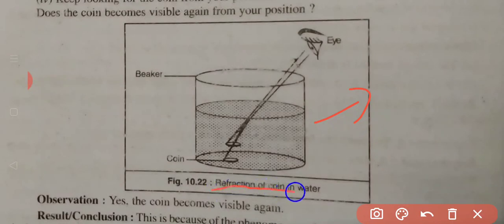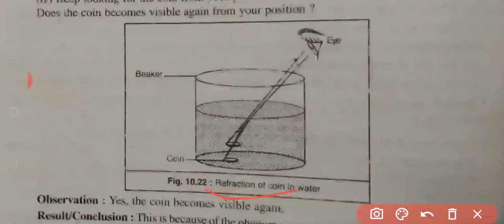You need to write: refraction of light is shown. Because of refraction of light, the coin appears to be raised upward.